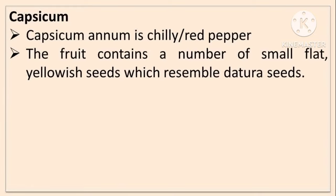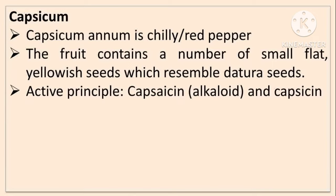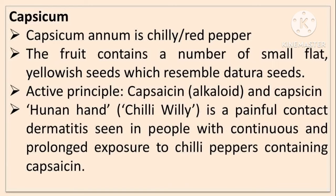Capsicum is a chili or red pepper. The fruit contains a number of small flat yellowish seeds which resemble dhatura seeds — so dhatura seeds and capsicum seeds resemble each other. The active principles are capsaicin and alkohol capsaicin. Hunan hand, also called chili lily, is a painful contact dermatitis seen in people with continuous and prolonged exposure to chili peppers containing capsaicin.